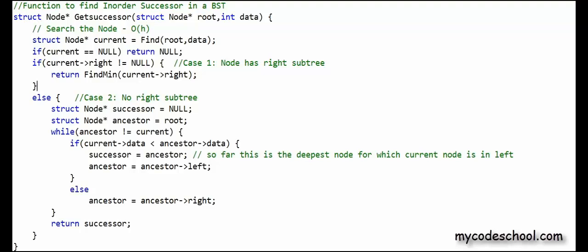You can find a link to the complete source code in the description of this video. Overall, time complexity of this function is O(h), which is what we wanted. The search costs O(h), findMin costs O(h), and walking the tree from root to a node in a BST also costs O(h). So overall this is O(h). If you have understood this logic, it should be easy to write a function to find the inorder predecessor as well — I encourage you to try. In coming lessons we will solve more interesting problems on binary trees and binary search trees. Thanks for watching.